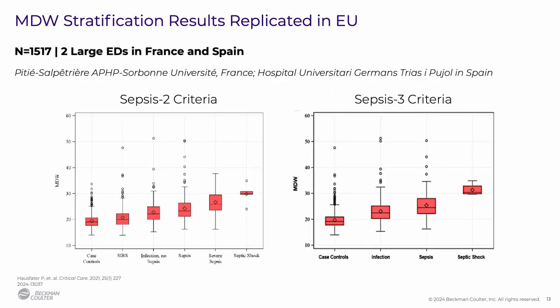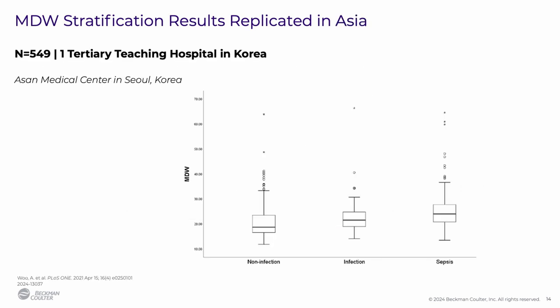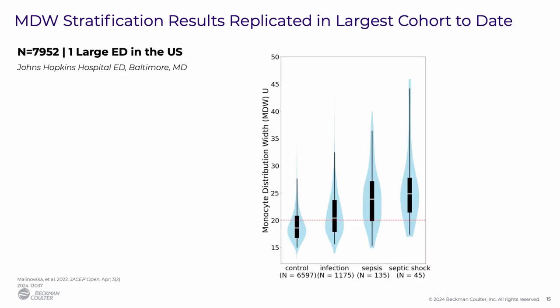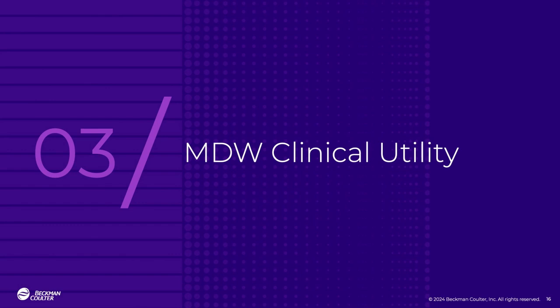Similarly, a blinded prospective cohort study which served as the pivotal trial in the EU showed similar outcomes where MDW value increases aligned with infection severity, whether using sepsis 2 or sepsis 3 criteria. The relationship between MDW value and infection severity was replicated in a tertiary teaching hospital in Korea, and in an analysis of the largest patient cohort to date — almost 8,000 patients presenting to the emergency department at Johns Hopkins Hospital. Finally, I'll share clinical evidence that MDW has potential to improve early sepsis detection above and beyond current best practice.